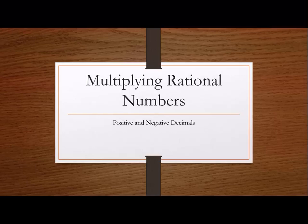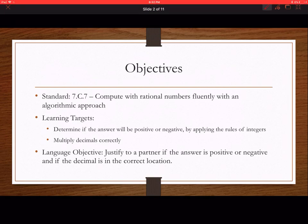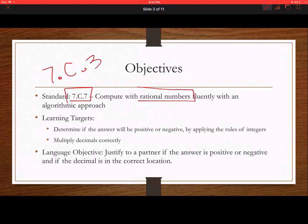We introduced how to multiply and divide integers yesterday, and now we're actually going to be multiplying positive and negative decimals. We're going to apply the rules that we had for integers to decimals, and apply the 7C3, which is multiplying integers, to 7C7, which is to compute with rational numbers fluently.